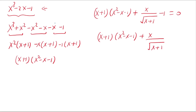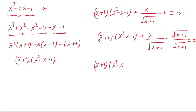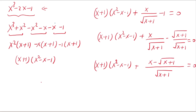The denominator part is square root of x plus 1. So this 1 is the same as square root of x plus 1 over square root of x plus 1, equals 0. Now, x plus 1 times x squared minus x minus 1, plus — with common denominator square root of x plus 1 — numerator x minus square root of x plus 1, equals 0.